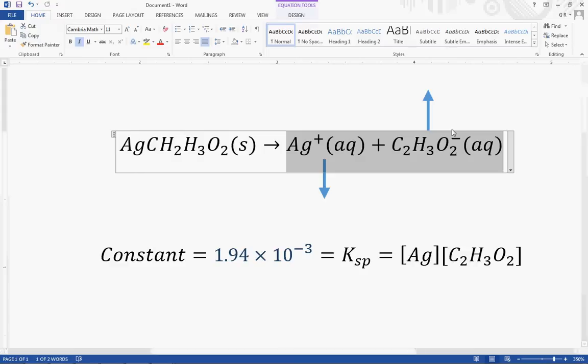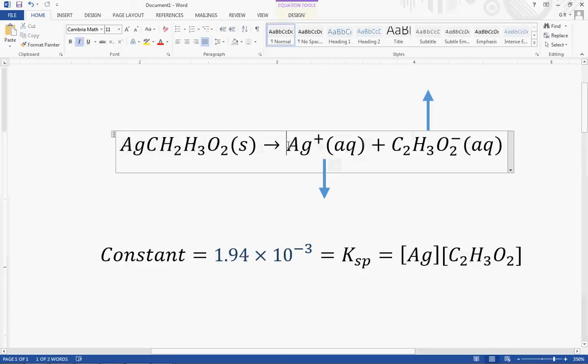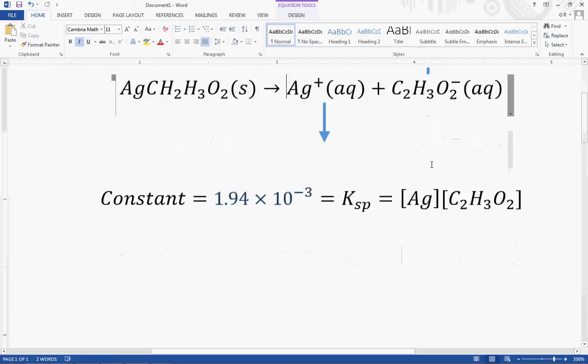So if we add a little bit more acetate, we're going to have to see a decline in silver and the reason is that because that's going to be shifting the reaction to the left and this will fall out as a salt. So if we add more acetate, there's going to be less silver. Conversely, if we add more silver, there's going to be less acetate.